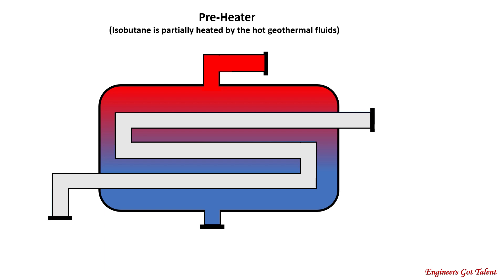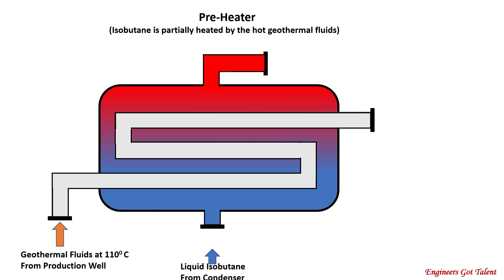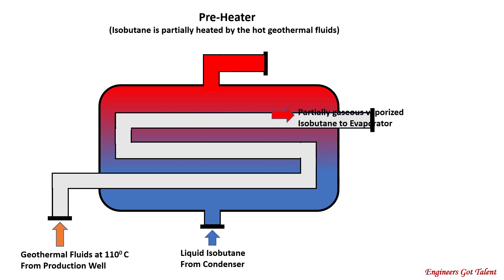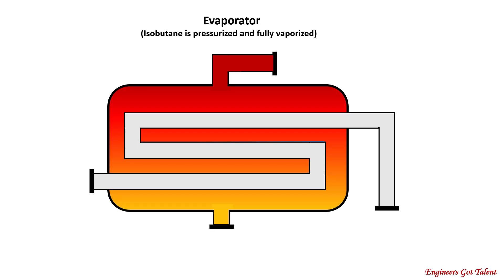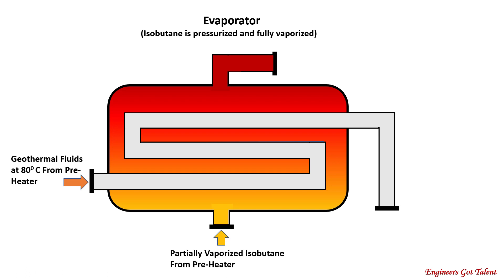Next is the preheater, which is a heat exchanger where the heat coming from the geothermal fluids is absorbed by the incoming liquid isobutane. The liquid isobutane boils and turns into partially gaseous vapor. The geothermal fluid exits the preheater at a lower temperature of 80 degrees Celsius. Next is the evaporator, also a heat exchanger, where the geothermal fluid continues to boil the partially gaseous vapor into 100% vapor.